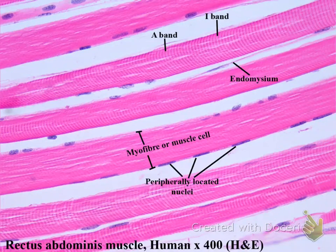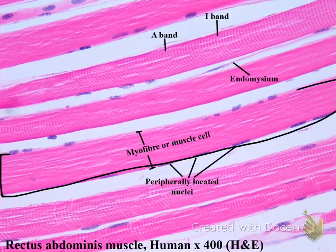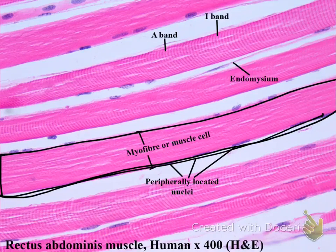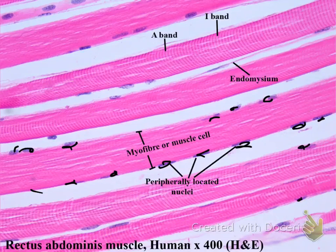Here is an actual photo of skeletal muscle tissue. Notice the light and dark bands — these are your striations. Notice that one muscle fiber or muscle cell is this one tube-shaped cell, and the nuclei are all situated on the outer layer of the muscle fiber, with multiple nuclei present.